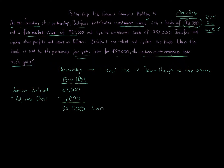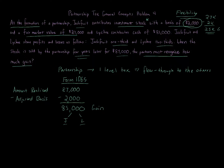On Form 1065 there will be an eighty-five thousand dollar gain reported. On the K-1s for the respective partners, we need to break up that eighty-five thousand dollar gain between Jackfruit (J) and Lychee (L). Some might say just allocate one-third to Jackfruit and two-thirds to Lychee — that's a good starting point, but partnership tax is more complex because of anti-abuse rules.